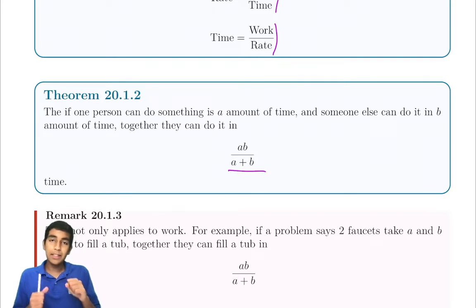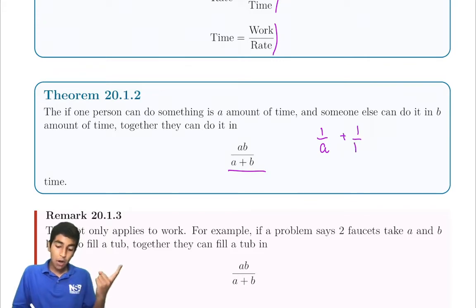The point is, if one person can do it in A hours, that means in one hour they can do 1 over A of the task. And the second person, if they can do it in B hours, in one hour they can do 1 over B of the task. So in one hour, they both can do 1 over A plus 1 over B, which is A plus B over AB of the task.